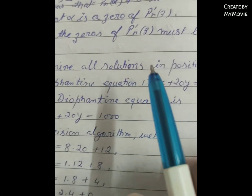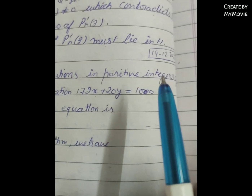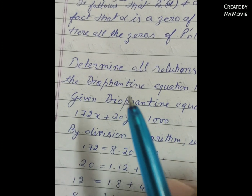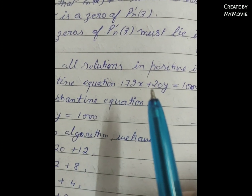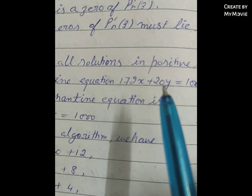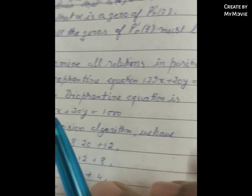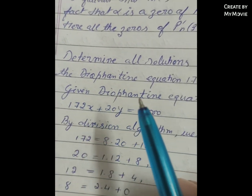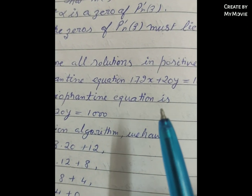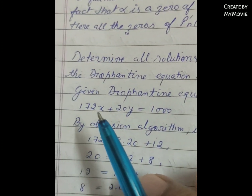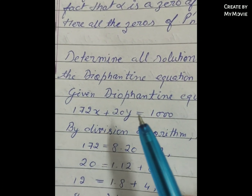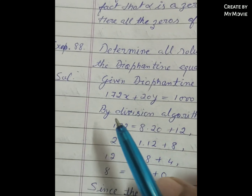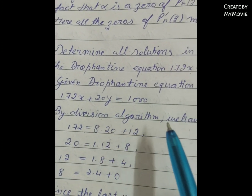Determine all positive integer solutions of the Diophantine equation 172x + 20y = 1000. The Diophantine equation is 172x + 20y = 1000, which is equation 1. By the division algorithm we proceed.